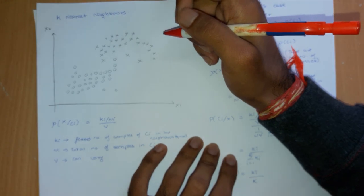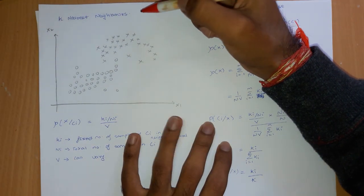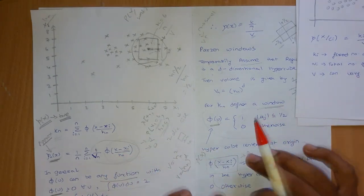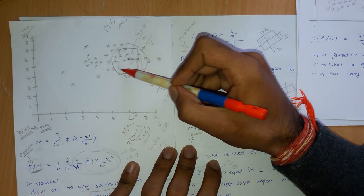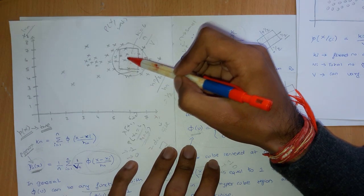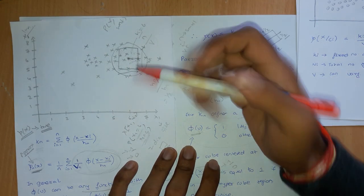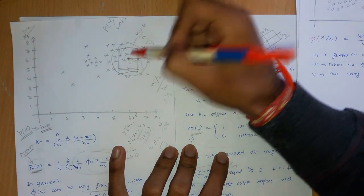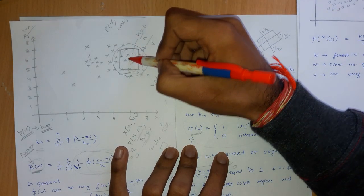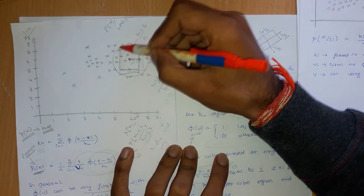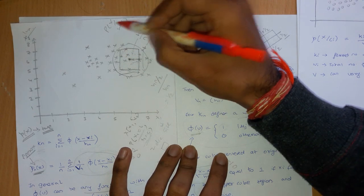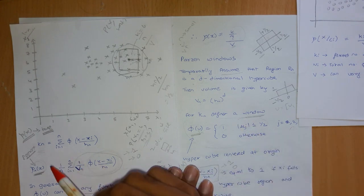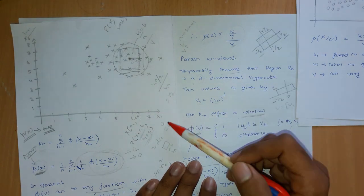In this video I'm going to talk about another non-parametric method: K-Nearest Neighbors. In the previous lectures we covered the Parzen window technique, where we find a region around the point of interest. We store the data, and if we want to find the probability of some point, we take a region around it and count how many samples are inside — that is k divided by the total number of samples, divided by the total volume of the region.